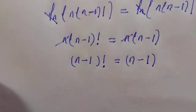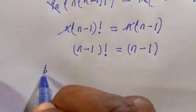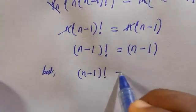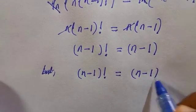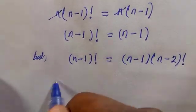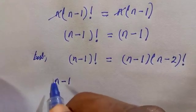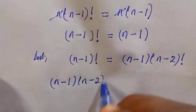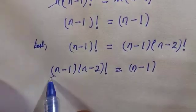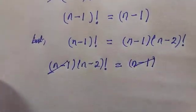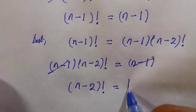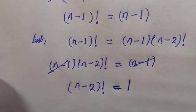Applying the factorial rule again for (n minus 1) factorial: (n minus 1) factorial equals (n minus 1)(n minus 2) factorial. Substituting above gives: (n minus 1)(n minus 2) factorial equals (n minus 1). Cancelling (n minus 1) from both sides gives: (n minus 2) factorial equals 1.